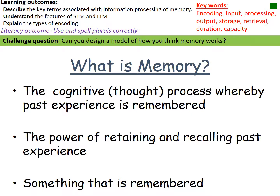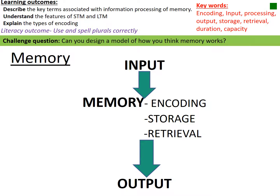Memory is about past experiences and how we remember them — it's the ability to recall a past experience. In a nutshell, information is input into our brains through our senses, then it goes into our memory where it's encoded, stored, and if we require it later we retrieve it and bring it to the forefront of our mind, producing an output. These keywords are really important.